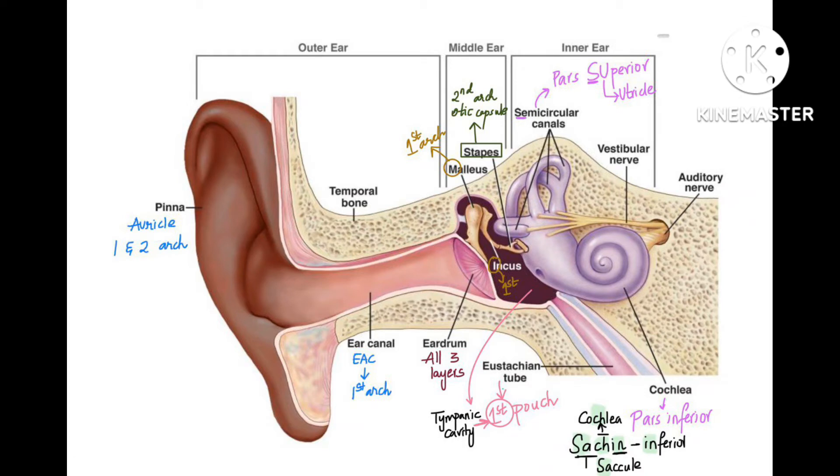Let us go to the inner ear. In the inner ear you have semicircular canals, saccule, utricle, and cochlea. Pars superior: semicircular canals and utricle are from pars superior. Superior word has S and U in it. So S is for semicircular canals and U is for utricle.